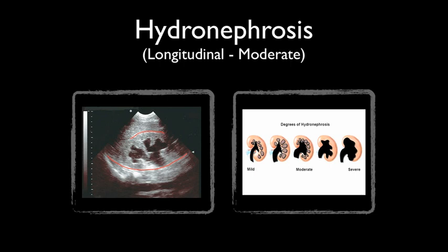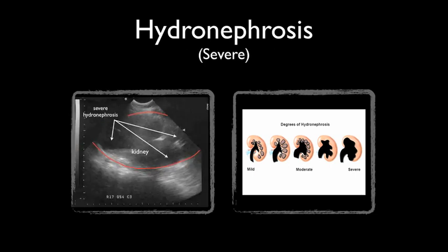Here's an example of moderate hydronephrosis. Recognize how much more pronounced the dilated calyces have become. This is an example of severe hydronephrosis. Note that the shape of the kidney is completely obliterated.